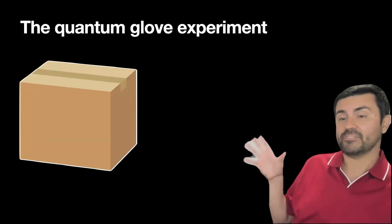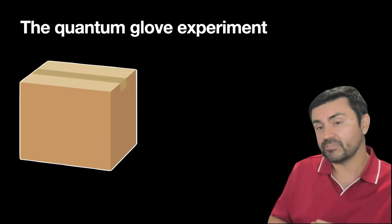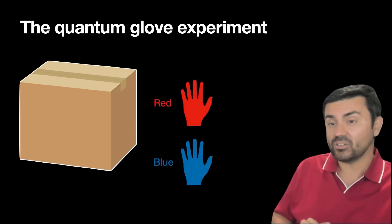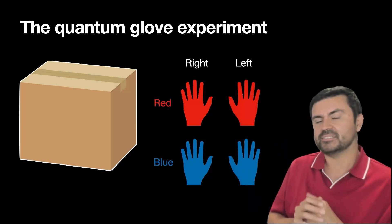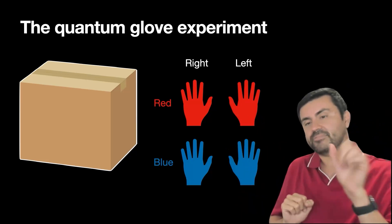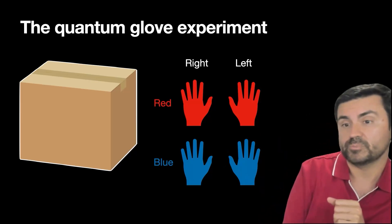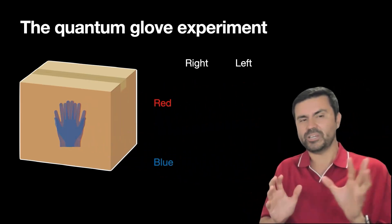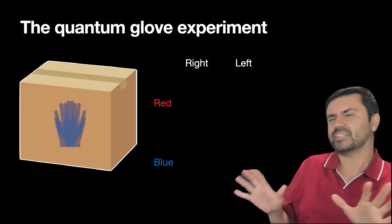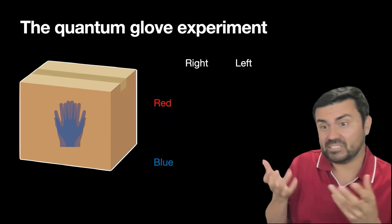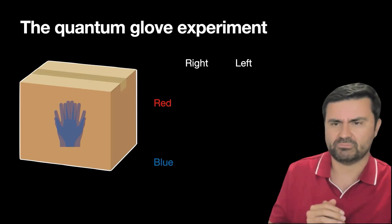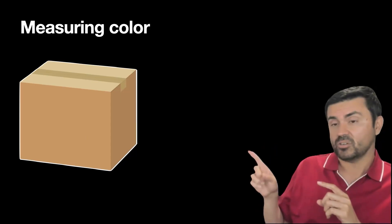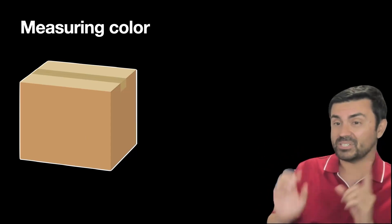This one is way stranger than the Schrödinger's cat experiment. We have a box, and in the box we have a glove. The glove could be red or blue, and also it could be right hand or left hand — so it could be four things: right hand red, left hand red, right hand blue, and left hand blue. We don't know what it is, so it could be in some kind of superposition. We can look at the color or we can look at the orientation, but not at the same time.